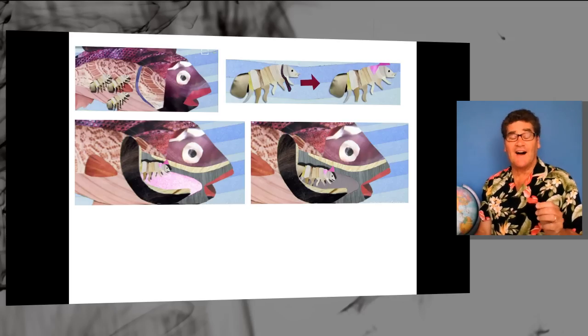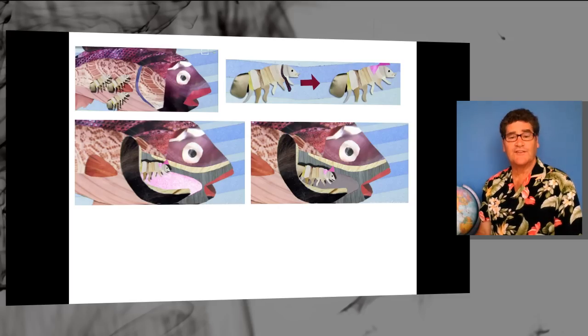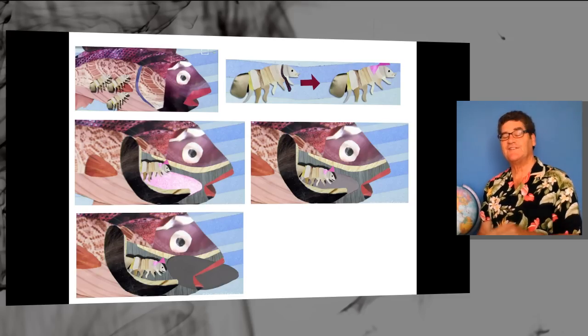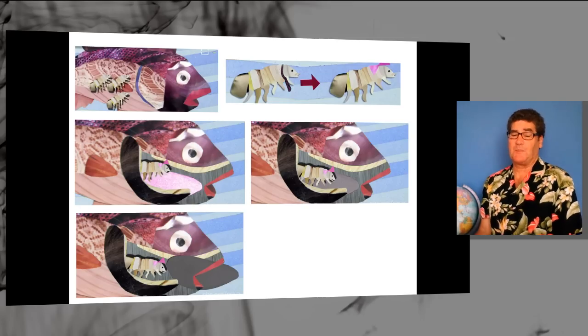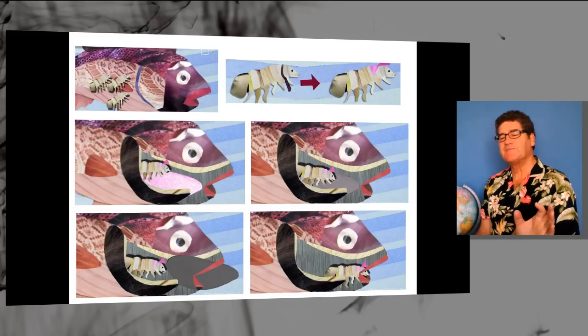It sucks blood out of the tongue until the tongue turns almost useless. Then the tongue is discarded, and this is pretty darn hurtful for the fish.